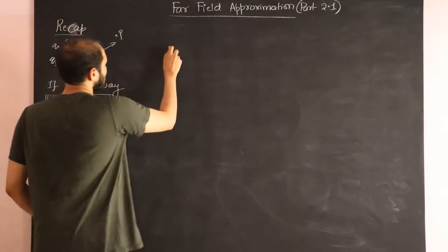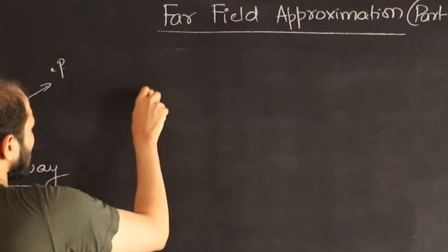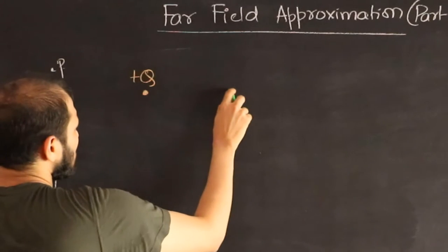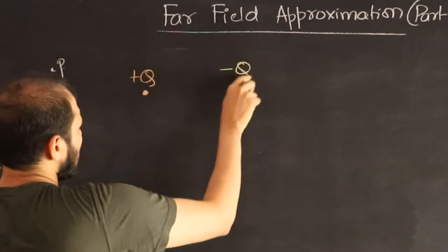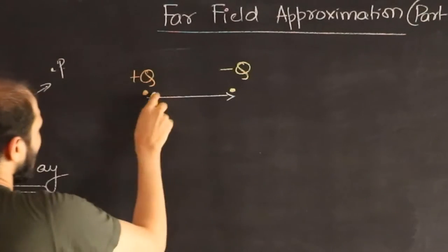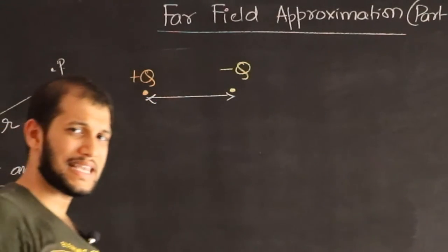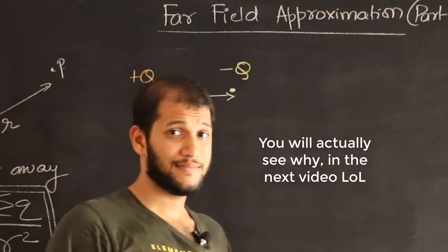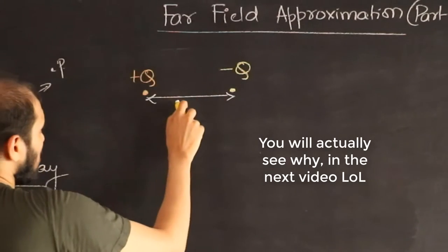Look over here. So here are the two charges. Say here is charge plus Q and here is charge minus Q. And imagine they are separated by some distance, and instead of calling that distance as A, I'm going to call the distance as 2A. You will see why.